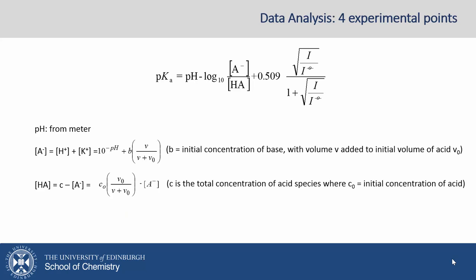We can now calculate the concentration of HA, which will be the concentration of acid species, minus the concentration of conjugate base formed. The concentration of acid species will be equal to C, and C0 is the acid species initially, the initial concentration of acid. So we've got C0 times the dilution factor, minus A minus.